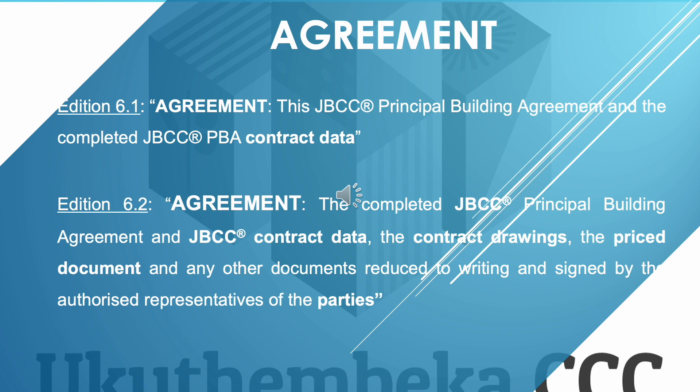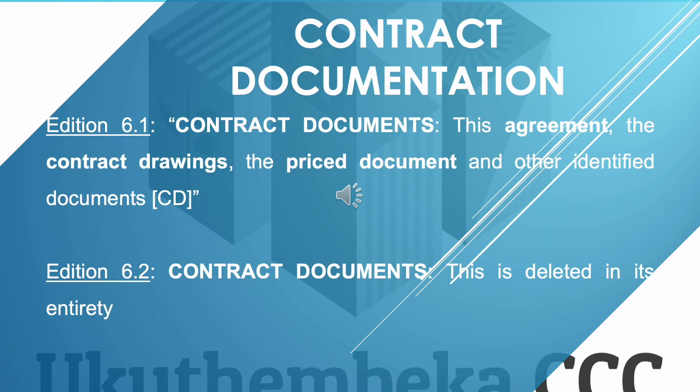It is evident that Edition 6.1 only made provision for documents included in the contract data, and in practice some other documents should form part of the agreement even if not specifically listed in the contract data. Subsequently, the definition of contract documents was deleted, as we will see in the following slide.